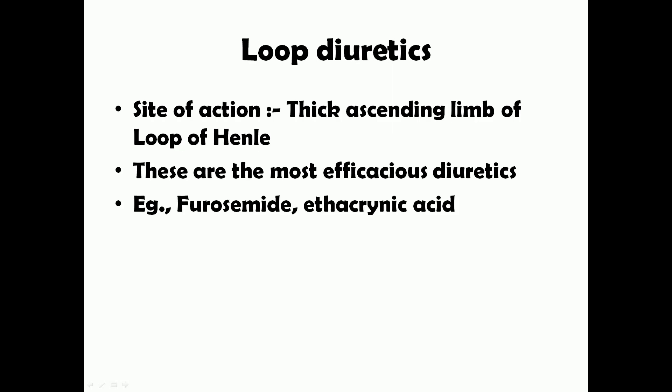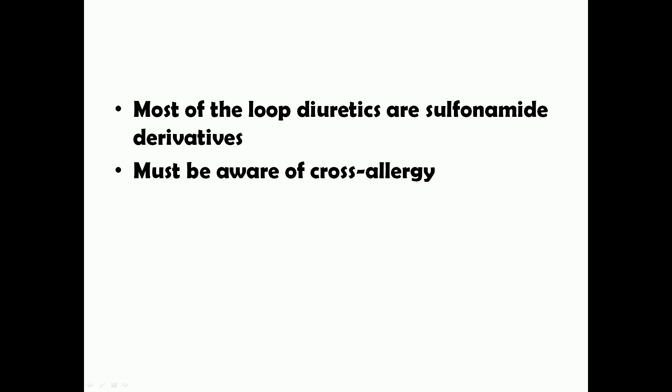Now we'll look at loop diuretics, which are a very important diuretic group. Their site of action is the thick ascending limb of the loop of Henle. These are the most efficacious diuretics and are the most preferred in most clinical cases. Examples of loop diuretics include furosemide and ethacrynic acid.